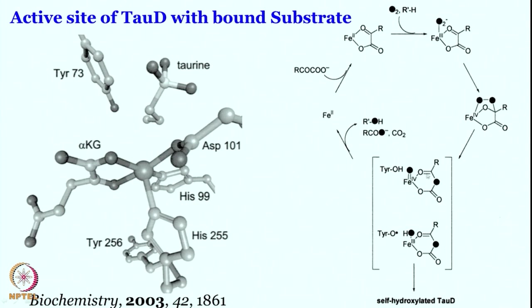In the presence of substrate R'-H, if it is sitting right next to the iron center, ROH formation proceeds. Decarboxylation converts alpha-ketoglutarate to succinate, carbon dioxide also comes out, and the overall catalytic cycle is completed by regeneration of iron(IV) to iron(II). Now let us look at the related but quite different outcome — the reaction mechanism and substrate halogenation chemistry.